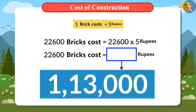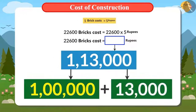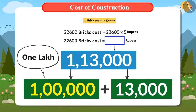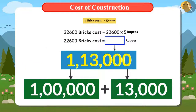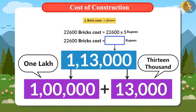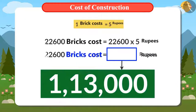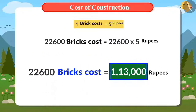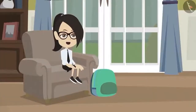Do you know how to read the answer? 100,000 is read as 1 lakh. So 113,000 is read as 1 lakh 13,000. This means the total cost of 22,600 bricks will be 1 lakh 13,000 rupees.